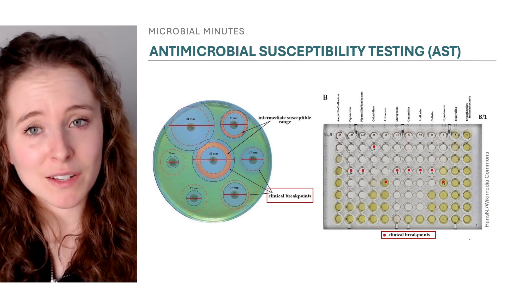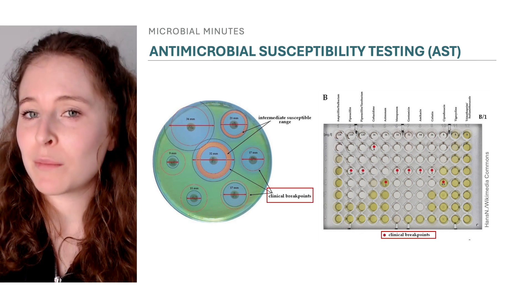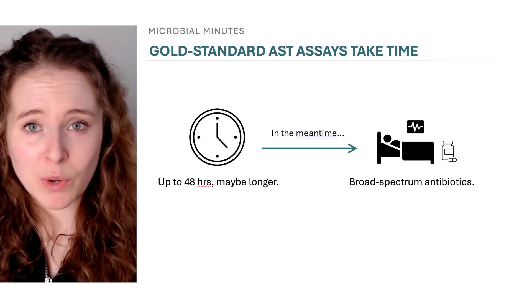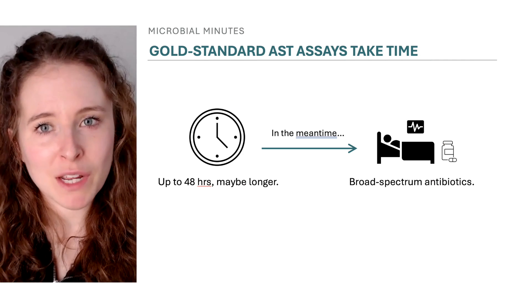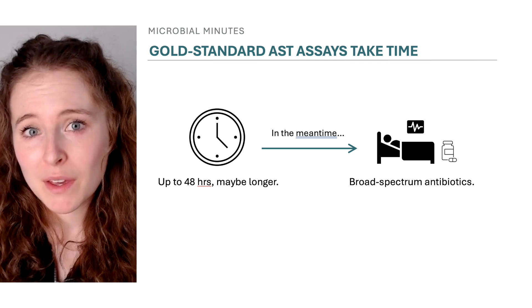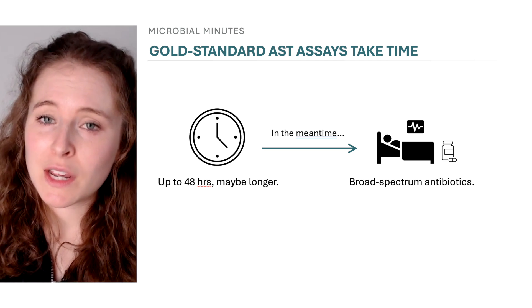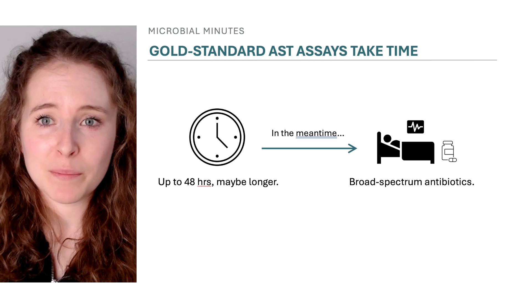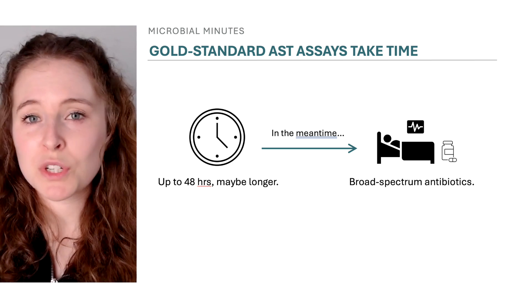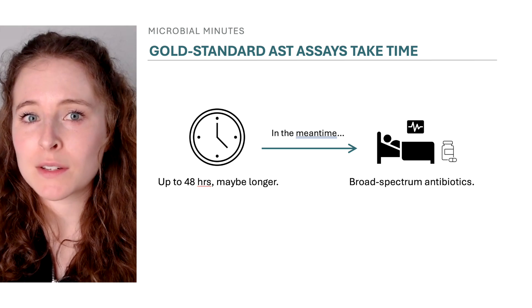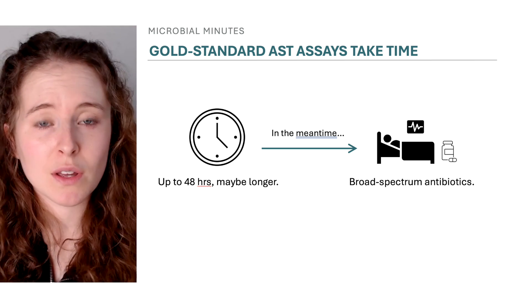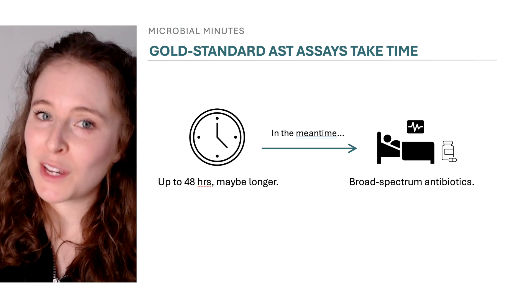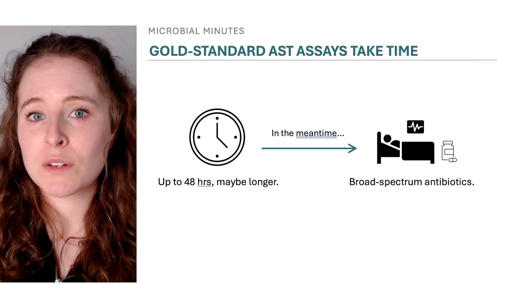Depending on the findings, healthcare providers can develop treatment regimens to effectively manage an individual patient's infection. Though highly standardized and widely used, standard AST methods have some limitations, including turnaround time. From sampling to results, it can take 18 to 48 hours to complete AST, maybe longer depending on the bacterium. During this time, patients usually receive broad-spectrum antibiotics until clinicians can create a more tailored treatment approach. These antibiotics are disruptive to the patient's microbiome, which plays a key role in health, and may be suboptimal for the patient's infection.